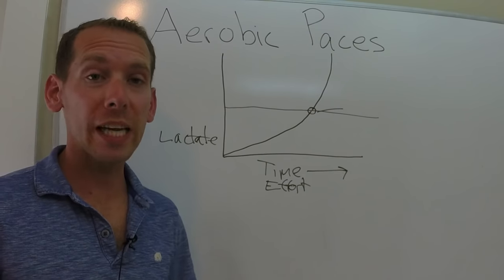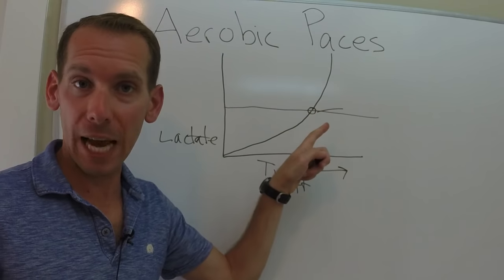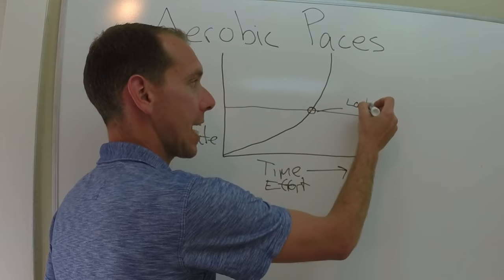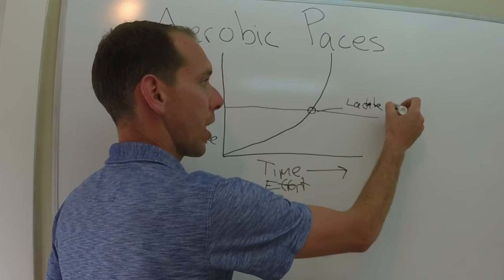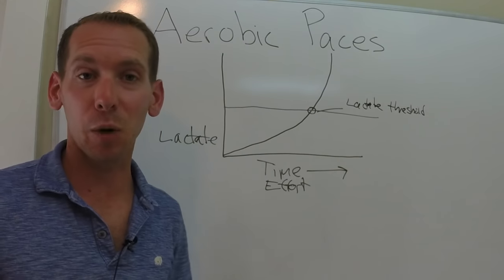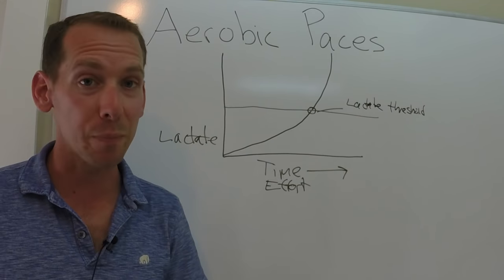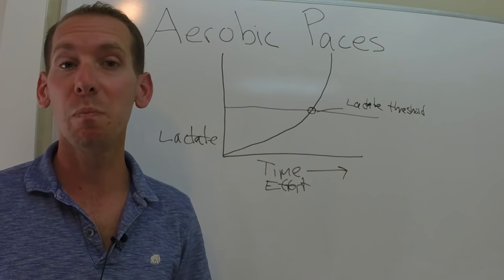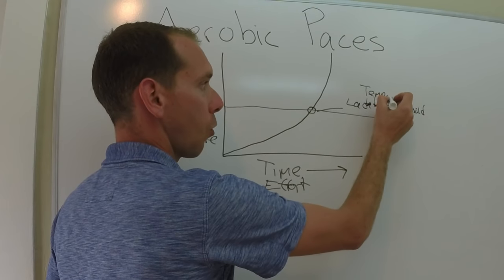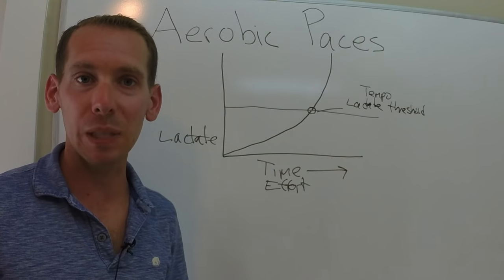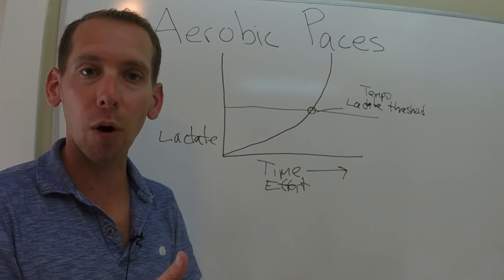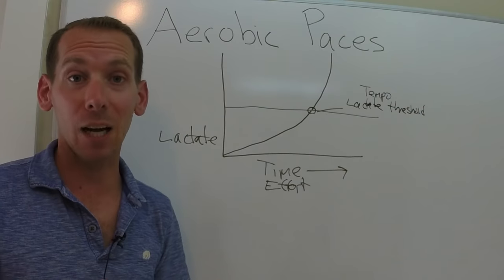Okay so when we're looking at our graph, this point where you start producing so much lactate that you simply can't clear it, that is what we call your lactate threshold. Now this has a lot of other names that you're probably a lot more familiar with: tempo or middle aerobic. So whenever someone says we're going for a tempo run or there's a tempo on the training plan, they almost always mean that lactate threshold, right on the border of running aerobically and anaerobically.